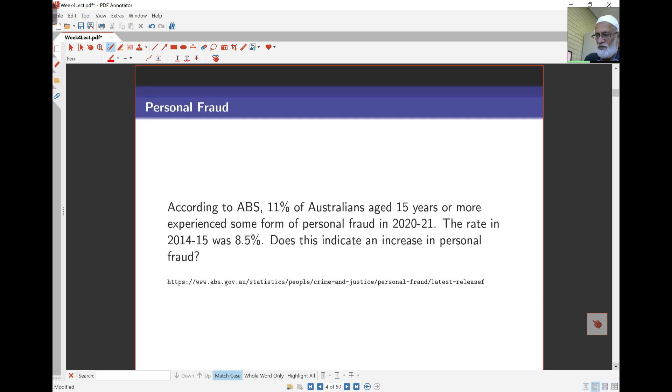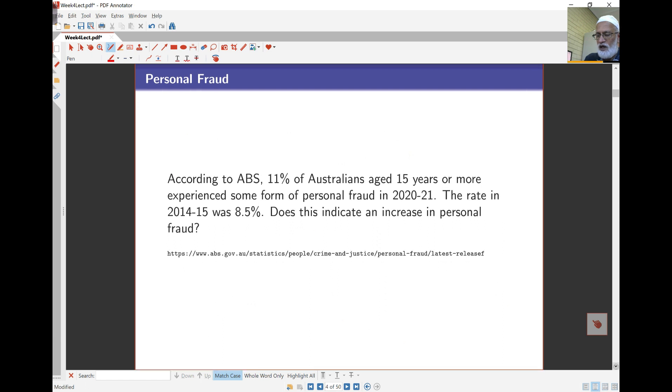Here's another example, personal fraud. According to the ABS, 11% of Australians aged 15 or more have experienced some kind of personal fraud in the year 2020-21. The rate in 2014-15 was 8.5%. Does that mean there has been an increase in personal fraud from 2014-15 to 2021?